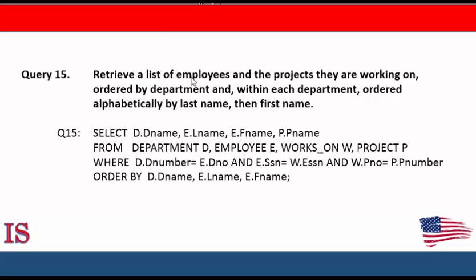Let's take a look at this example. Retrieve all employees and the projects they are working on, ordered by department and within each department ordered alphabetically by last name then first name. We're selecting the department's D-name, the employee's last name, and the project's project name, with aliases defined in the FROM clause where department number equals employee department number and so forth. The ORDER BY clause lists department name, then employee last name, then employee first name — the ordering follows the sequence in which the attributes appear in the ORDER BY statement.